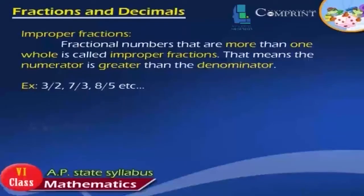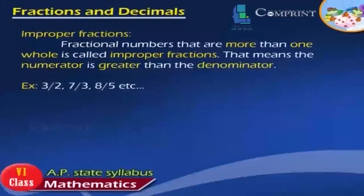Improper Fractions. Fractional numbers that are more than one whole are called improper fractions. That means the numerator is greater than the denominator. Examples: 3 by 2, 7 by 3, 8 by 5, etc.